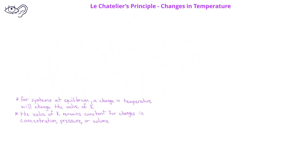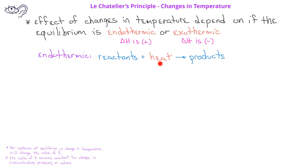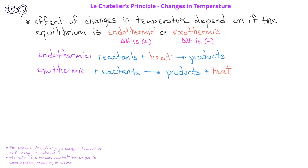When we change the temperature of a system at equilibrium, the effect depends on whether the reaction is endothermic or exothermic. For an endothermic reaction, heat is added to the system — in other words, we can treat heat as if it were a reactant. For an exothermic reaction, heat is released from the system, and so we can treat heat as a product. Heat can thus be treated as either a reactant in endothermic reactions or a product in exothermic reactions.